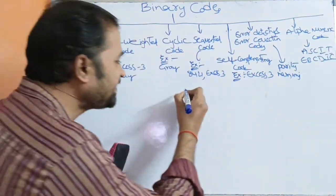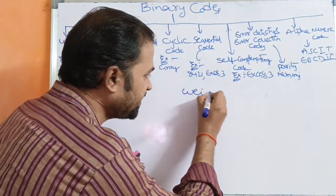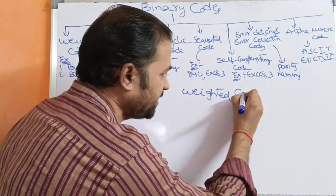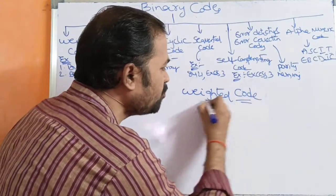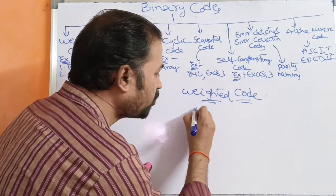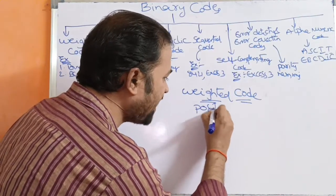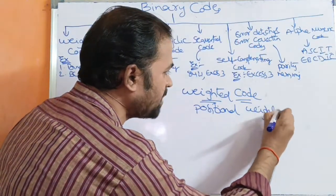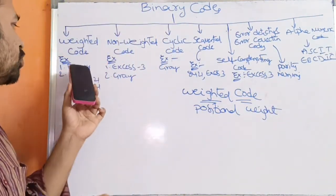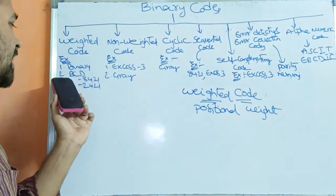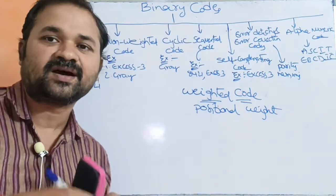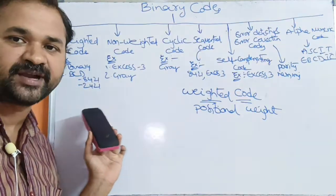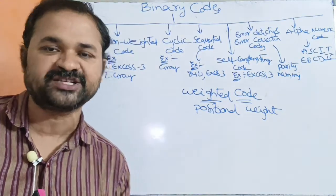The first one is weighted codes. The name itself specifies the meaning — here the value depends upon the positional weights. The best examples for weighted codes are binary numbers and BCD numbers. The best examples for BCD notation are 8421 notation and 2421 notation.